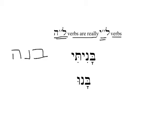The word baniti is a kal perfect 1cs. Whenever we have a perfect verb which brings a suffix onto the end of a lamed-he that begins with a consonant — in this case, taf — what happens is the yod reappears. It was apparently there, but it normally just isn't seen at all. When a consonant suffix is brought onto the root, the yod reappears and holds the heavy consonant away from the main part of the root. So, baniti — that's pretty typical.